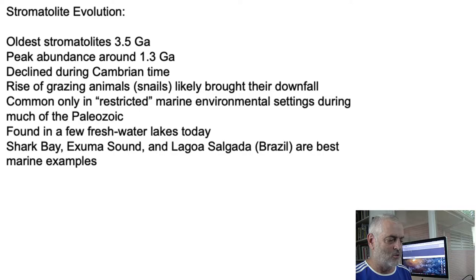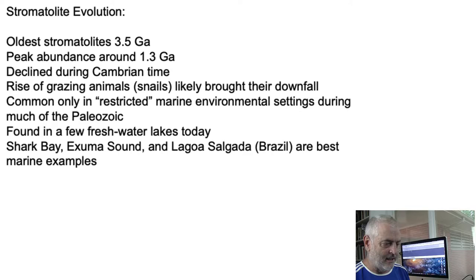Brazil is another location for modern stromatolites. Shark Bay is in Western Australia. Exuma Sound is in the Bahamas, where high rapid tidal current energy keeps most grazing organisms down. In Shark Bay, the water is hypersaline — very little rain and very hot. At Laguna Salada in the Bahamas, conditions also support living stromatolites. These are three of the places where you can find living stromatolites today.